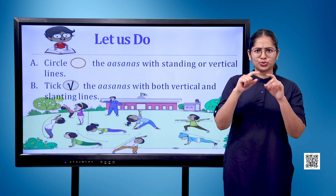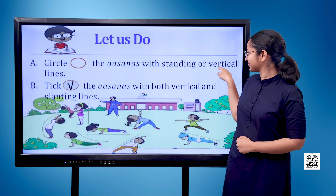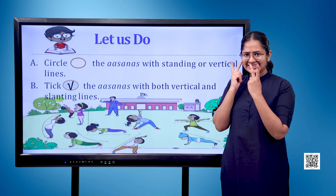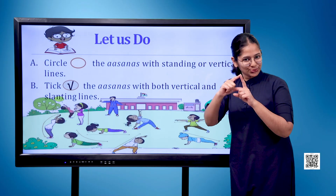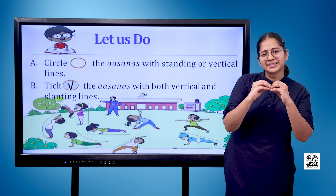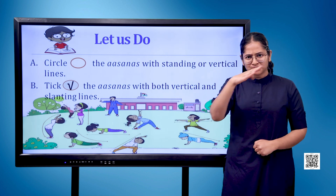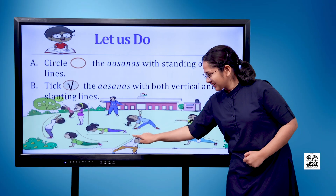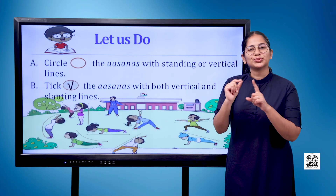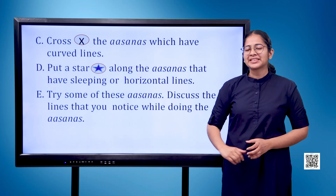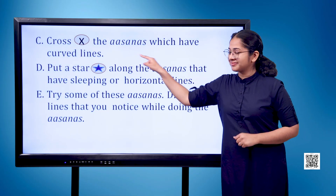Let us do: A. Circle the asanas with standing or vertical lines. B. Tick the asanas with both vertical and slanting lines. C. Cross the asanas which have curved lines.